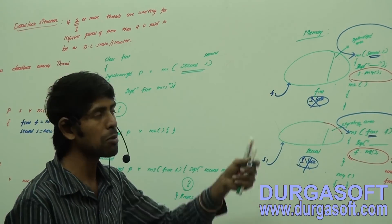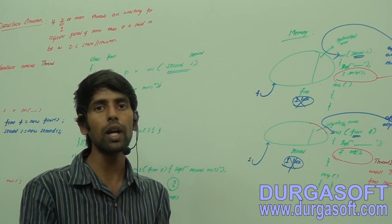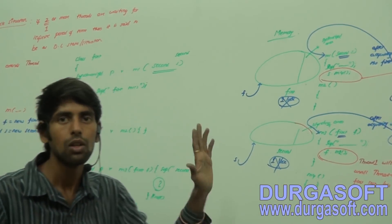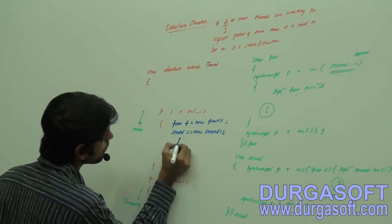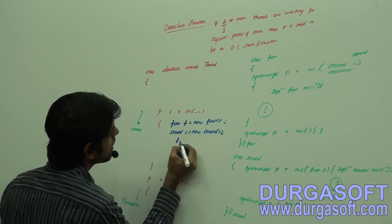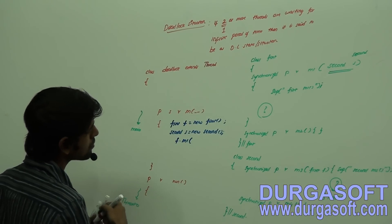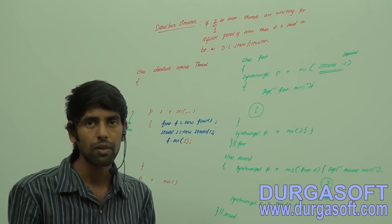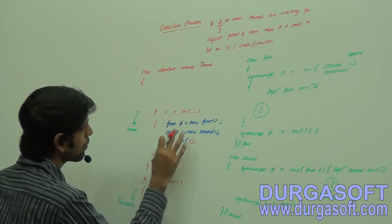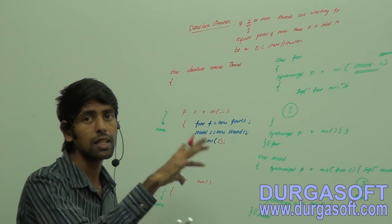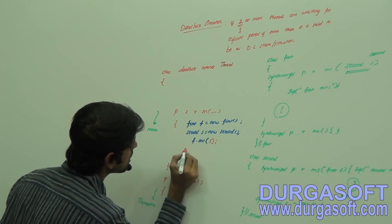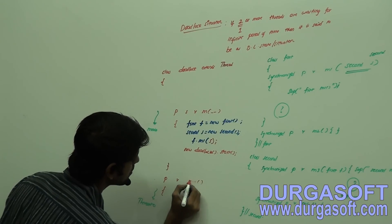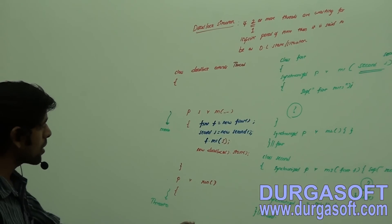My main intention is that simultaneously two threads should execute the methods in the First class instance and the Second class instance. To achieve this, if I call f.m1() I need it executed by two threads simultaneously. I need to start a thread. Let me start the thread: new Deadlock().start(). Inside the run method, a thread has been started — this ends the deadlock situation.